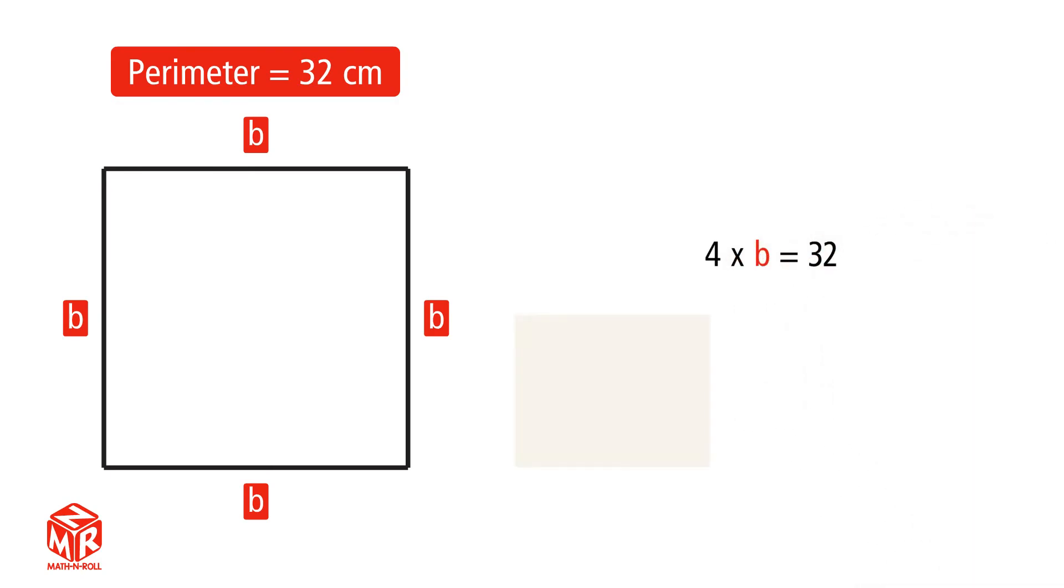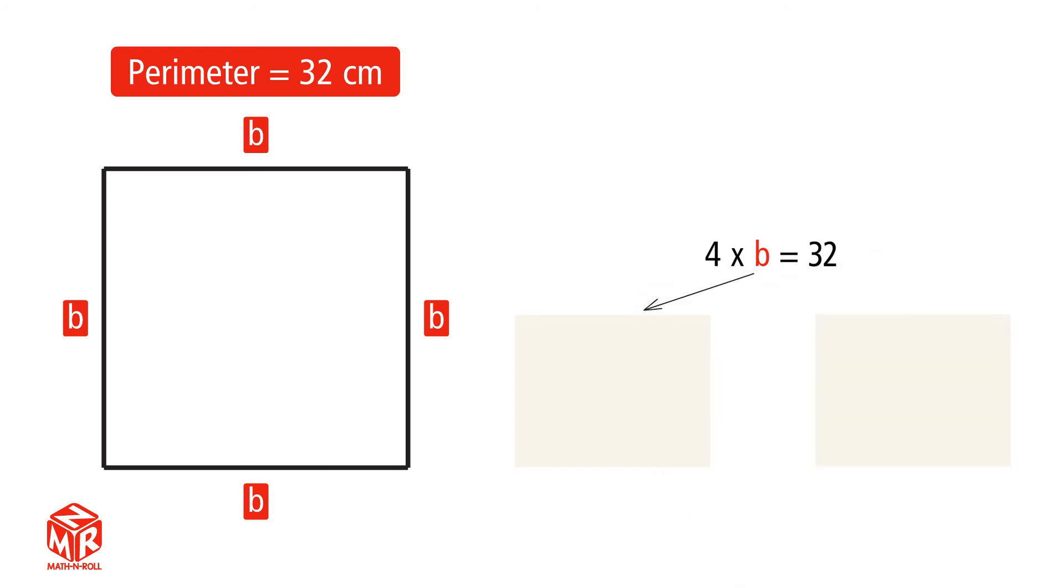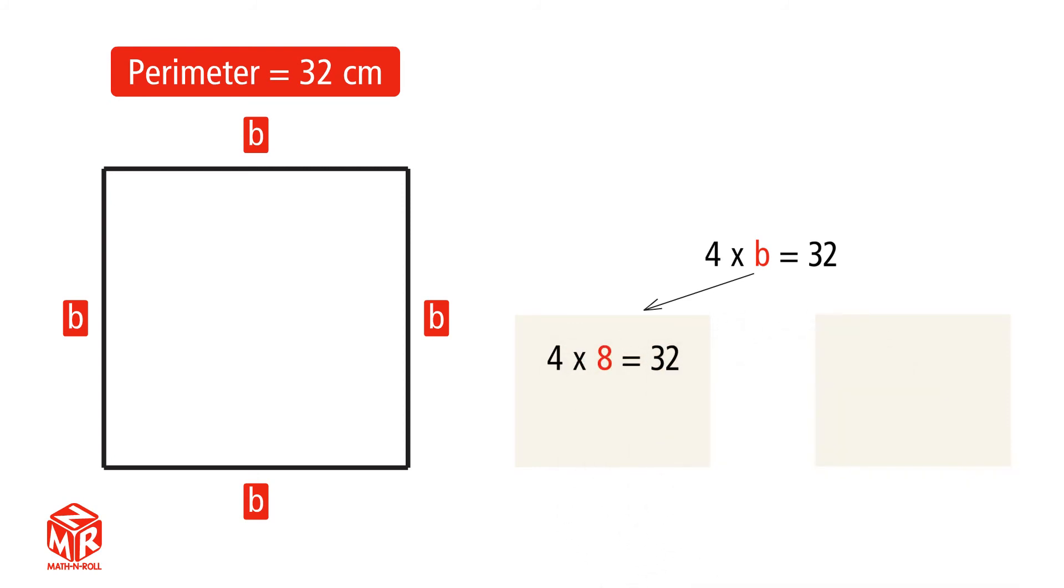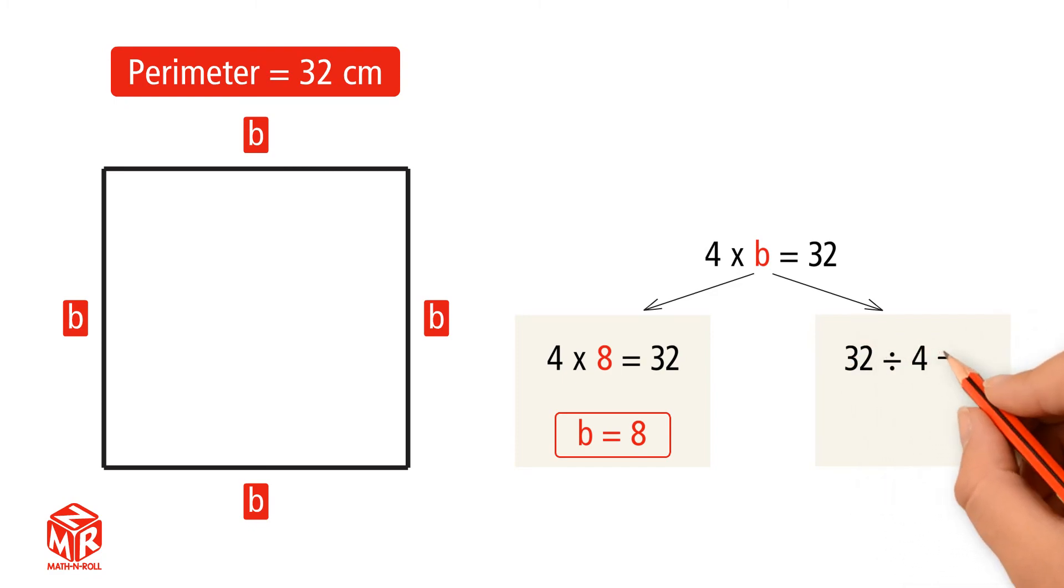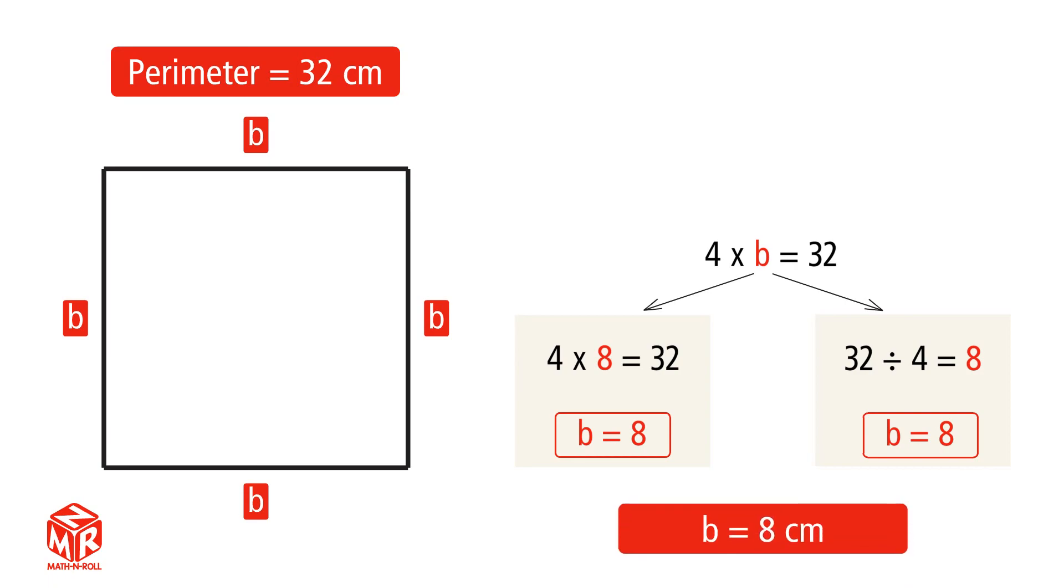We can find B in two ways. The first way is using multiplication facts that we already know. We know that 4 times 8 equals 32, so B equals 8. The second method is using the opposite of multiplication, division. 32 divided by 4 equals 8. So B equals 8. The unknown side length of this square is 8 centimeters.